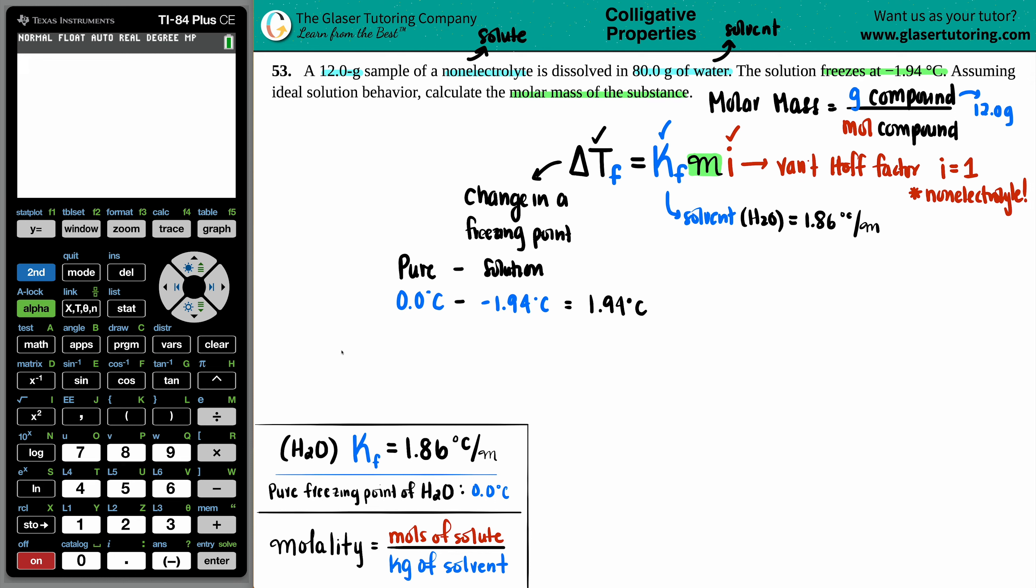So maybe I'll put it over here. So we have 1.94 equals the Kf, which we found from the textbook 1.86, times the molality, times 1, because it's a non-electrolyte. Anything times 1 is itself, so no one cares. We could just divide on both sides by 1.86. That cancels. And 1.94 divided by 1.86. That looks good to me. And I get a molality, x equals 1.043. So now I have a molality.